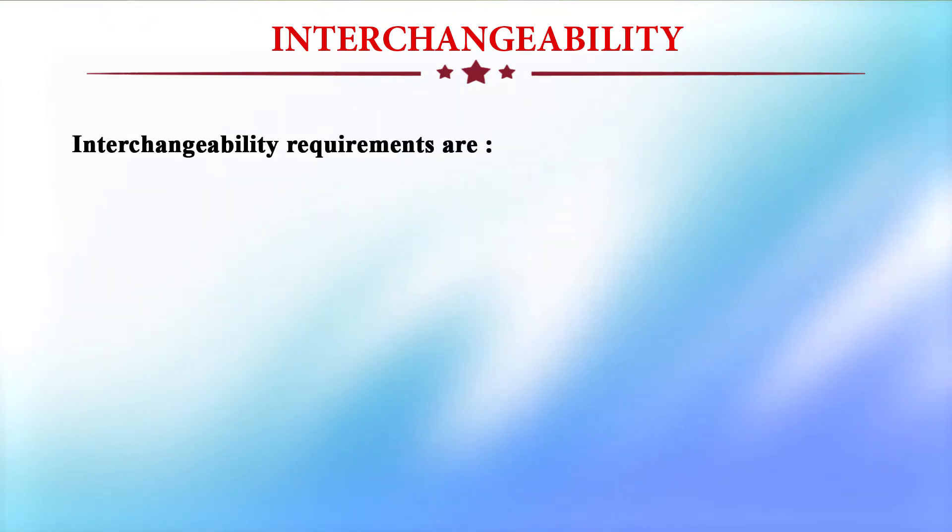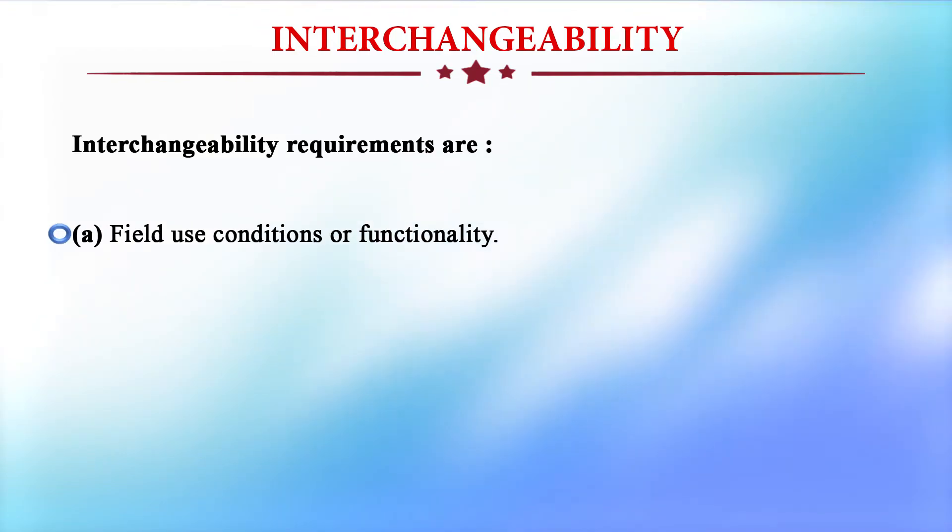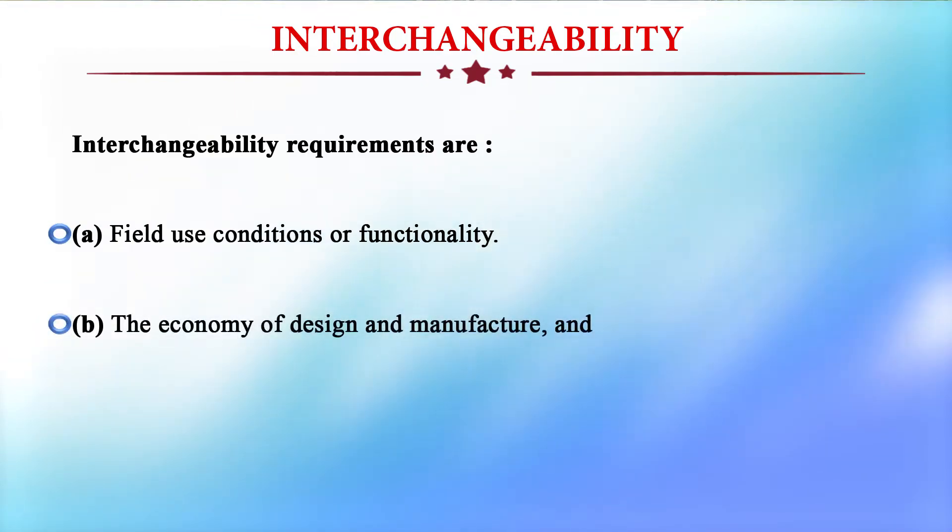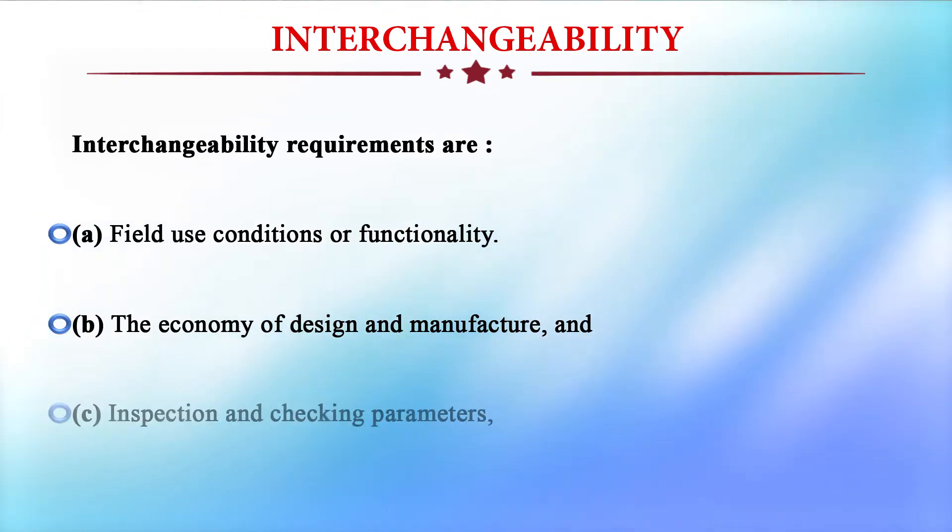Interchangeability requirements are: field use conditions or functionality, economy of design and manufacture, and inspection and checking parameters. Because of the same functions, parts can be interchangeable. Economy of design also provides more economy if parts are interchangeable — once designed, they can be manufactured at any time. The inspection method is standardized so that the same inspection can be utilized for different products produced in the machines.